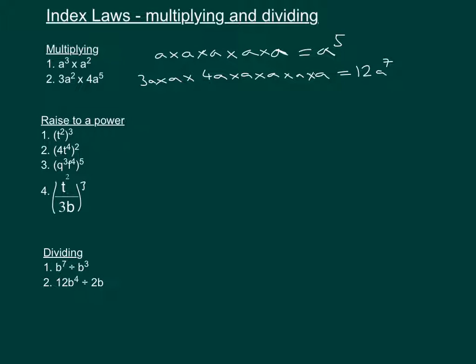As a general rule: a to the power of n times a to the power of m equals a to the power of n plus m. Essentially you're just adding the powers when you're multiplying them together.